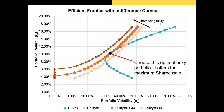The reason we call these curves indifference curves is because investors are getting the same utility out of every point on the line, and so they should be indifferent to any portfolio that allows them to reach any point on this line. Utility is increasing as we move from the bottom right to the top left, where we have high returns and low portfolio volatility. Modern portfolio theory says there is a point on our efficient frontier that will be tangential to some indifference curve — we want to reach the highest possible indifference curve, and it will touch our efficient frontier at exactly one point. This is our optimal risky portfolio, giving us our maximum Sharpe ratio.